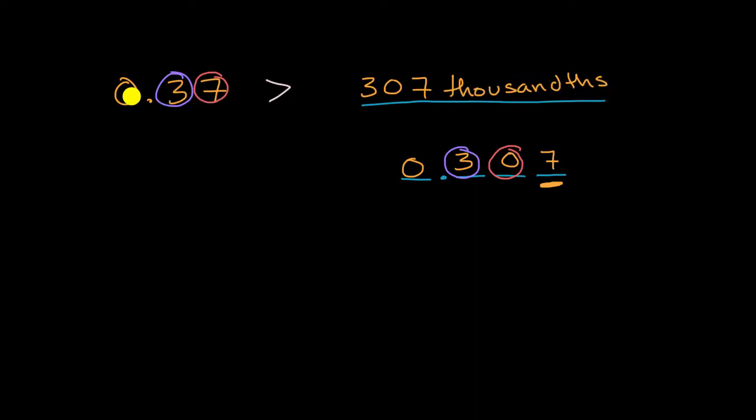Another way that we could have done this is we could have re-expressed this left number in terms of thousandths. We could have rewritten it as, instead of 37 hundredths, we could have just said 0.37 and just put another zero on the right, and this is 370 thousandths. And when you look at it this way, once again it's clear that 370 of something is more than 307 of that something. So this quantity on the left is larger.